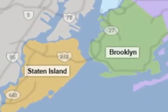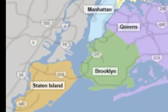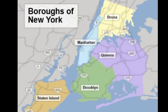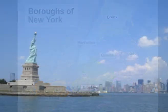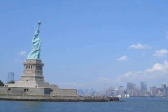There's also Staten Island over here, and as you can see it's not connected — you have to take a ferry, you have to go by boat to get there. The Statue of Liberty is actually located on its own island called Liberty Island. You can't get there by cab or by subway; you have to take a boat to get there.